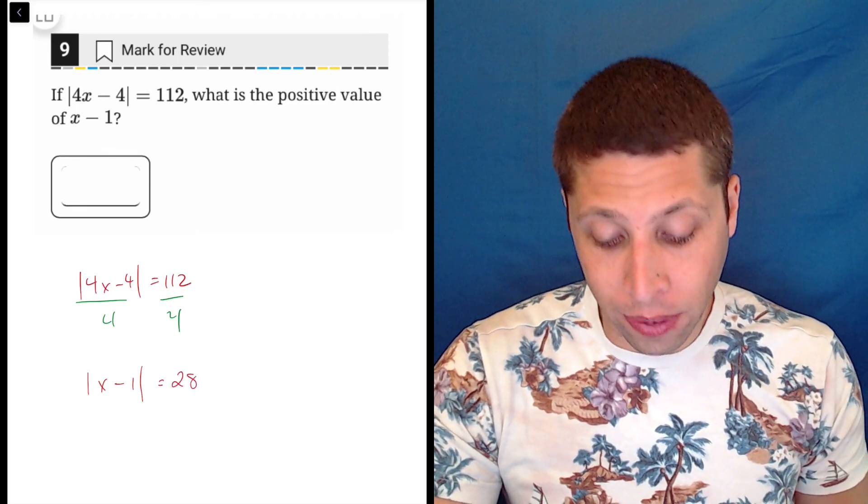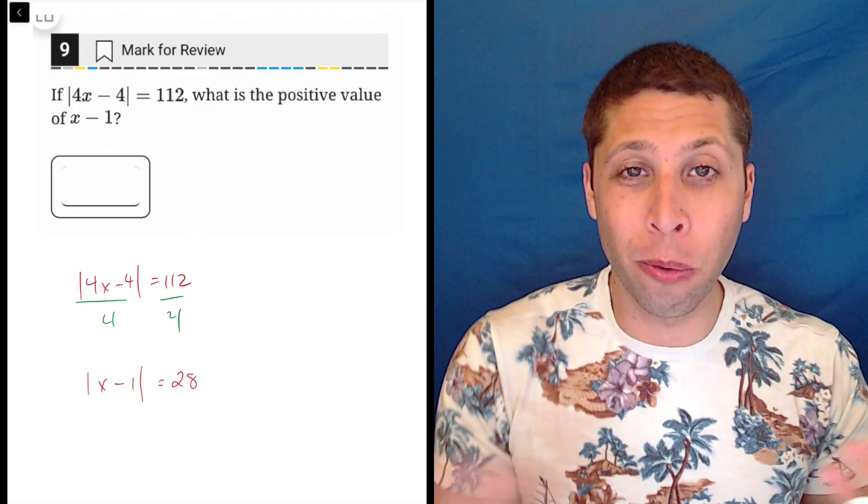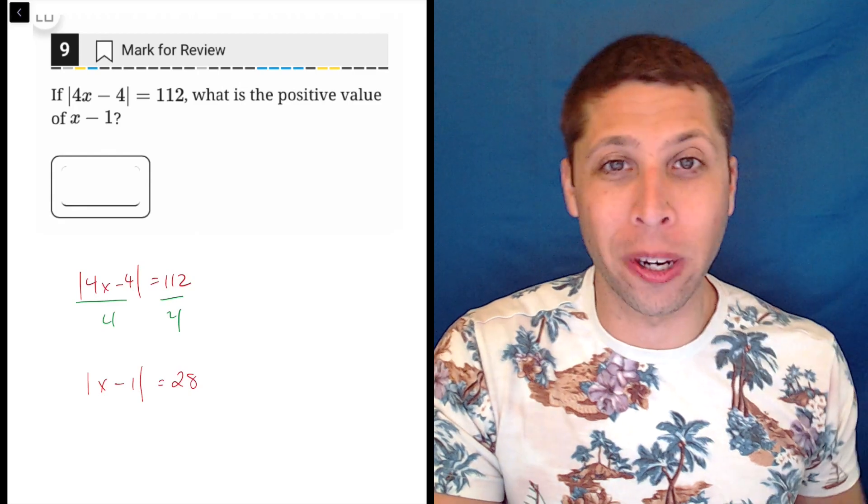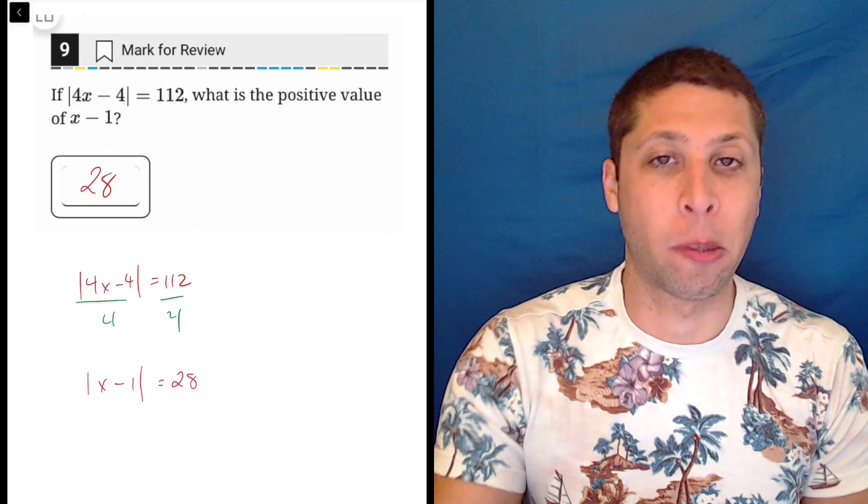So when they ask for the positive value of x minus 1, they're just saying, if you took the absolute value of it, you're supposed to get 28, so what positive number gives you 28 when you take the absolute value? That's just 28. So we don't need to know x here. We're just being asked for x minus 1.